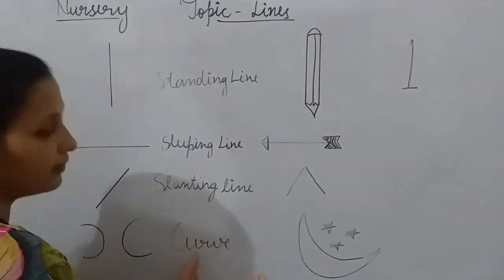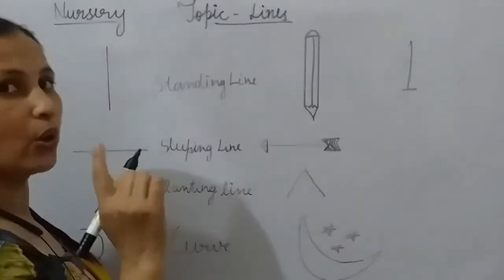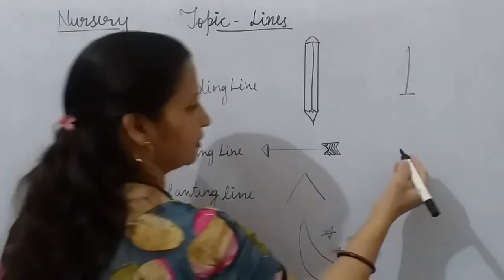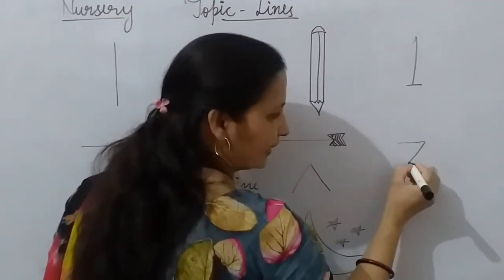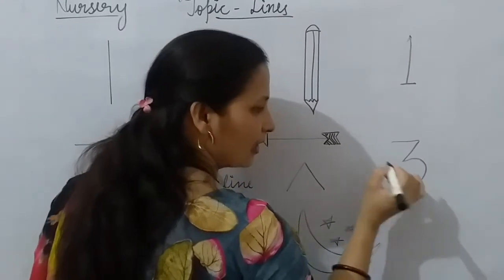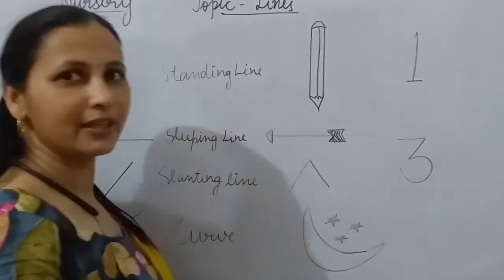Now, we have three lines that we have left in one word. See, sleeping line, slanting line, then curve. What is it? Three.